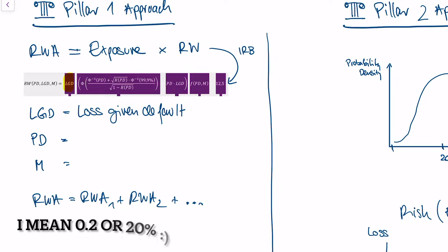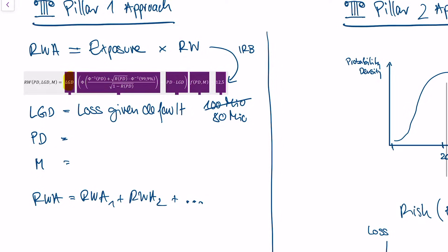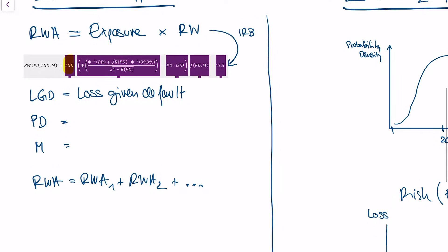In that case, your loss-given-default would be 0.8, or 80%, because if the company can't pay back the loan of 100 million euros, you get the headquarters worth 80 million euros. So you will lose 20% of your credit, but 80% can be recovered via the security. What also goes into the formula is the so-called PD — probability of default — which measures how probable it is that the counterparty can pay back the loan in the next year.